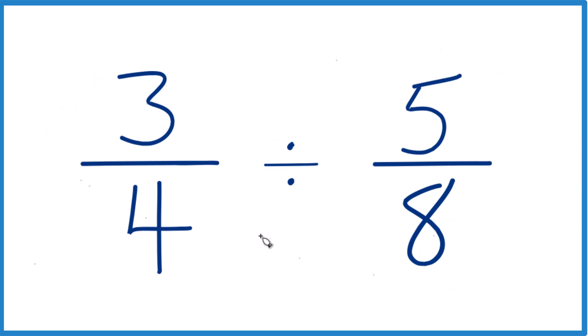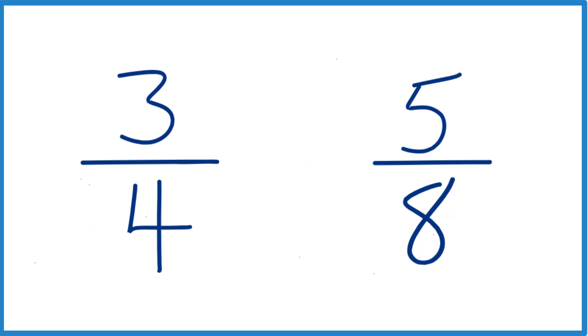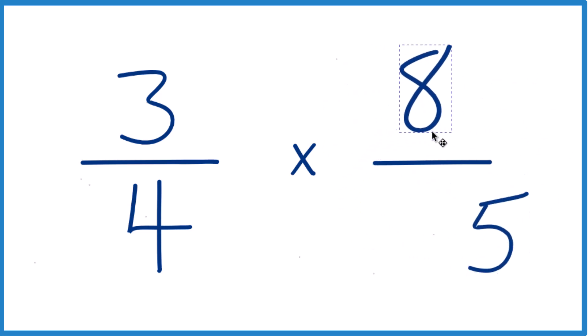So when you're dividing fractions, like 3 fourths divided by 5 eighths, instead of division, what you can do is you can just take and multiply by the reciprocal. And you get the reciprocal here for 5 eighths by moving the numerator down to the bottom denominator that goes up to the top.